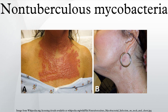NTM diseases have been seen in most industrialized countries, where incidence rates vary from 1.0 to 1.8 cases per 100,000 persons. Recent studies, including one done in Ontario, Canada, suggest that incidence is much higher. Pulmonary NTM is estimated by some experts to be at least 10 times more common than TB in the U.S., with at least 150,000 cases per year.